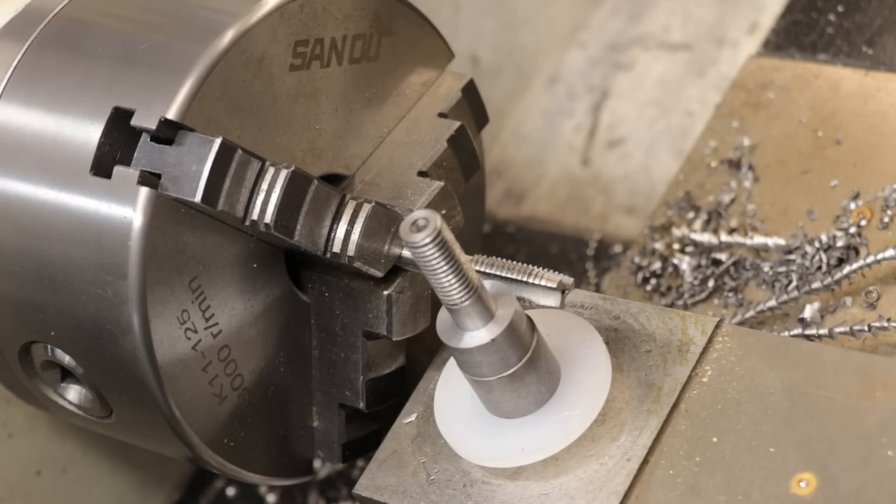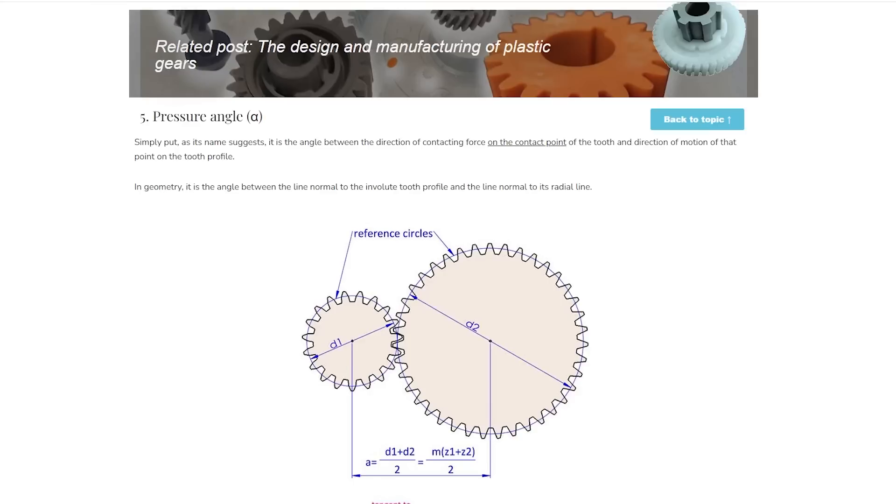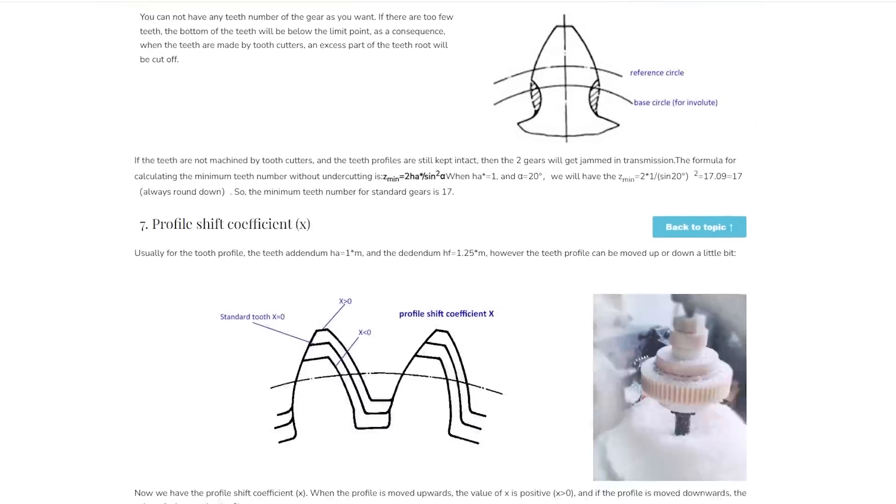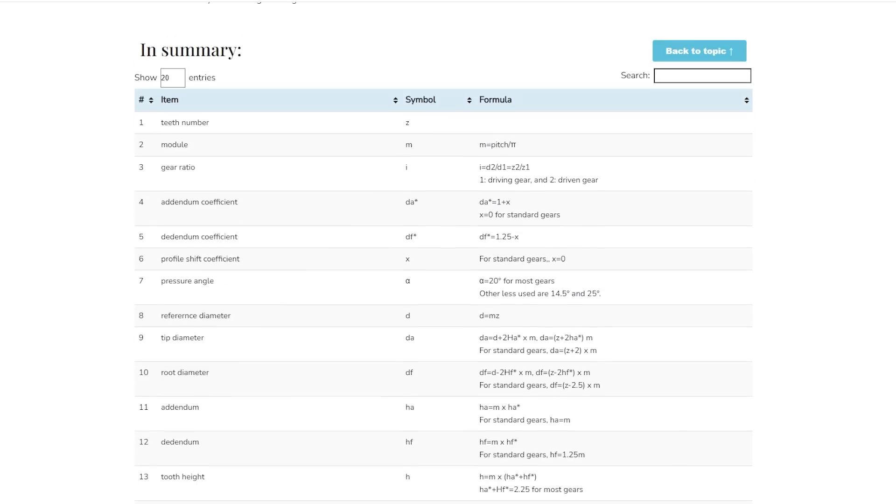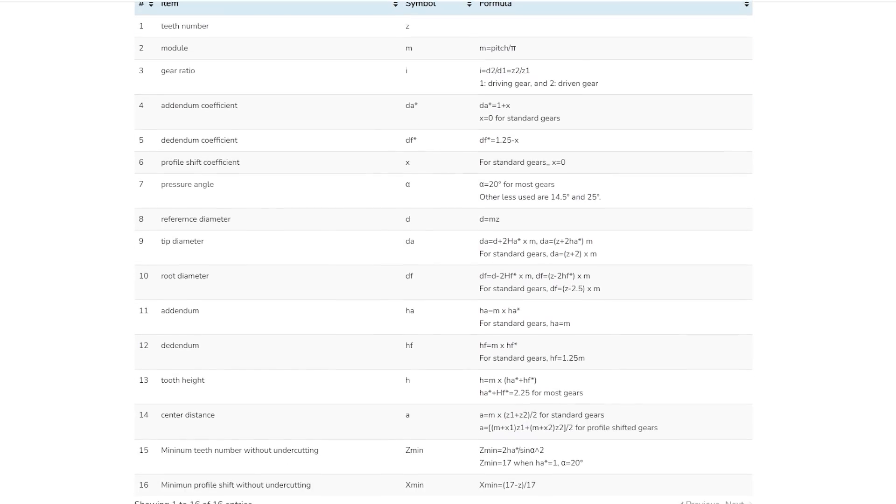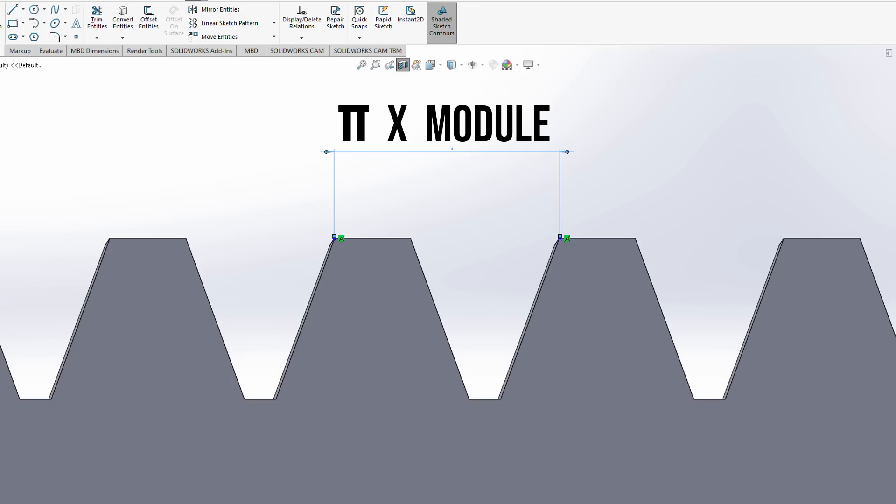I'll be using an M10 by 1.5 tap which is probably as small as you'd want to go. And already we sort of have problem number one because most of the established formulas that I work to don't work here, because all those formulas are set up to work for module or diametral pitch gears and thread taps aren't based on module which itself is based on pi, you know 3.14.